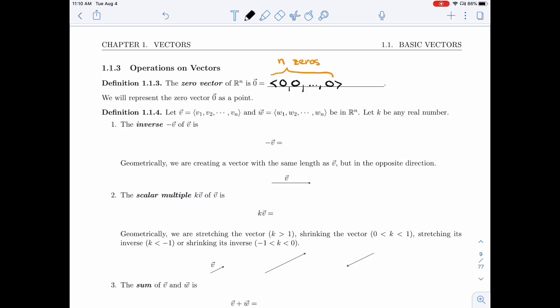All right, let's define operations now. I'm going to start with two vectors. I have V here, which has components V1 to Vn. I have W, which has components W1 to Wn. So they are both vectors in Rn. And I have K, which is a real number.